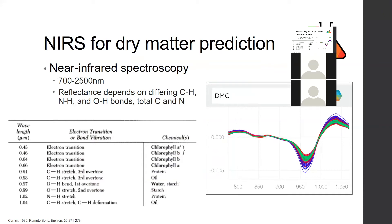The problem with benchtop NIRS is that you still have to take all your samples back to the lab, process them, and then run them through the spectrometer. There is a handheld unit version, which Hugo out of Jean-Luc's lab is exploring, and he has shown that method can also have high accuracy. But the cost of these devices is prohibitive.